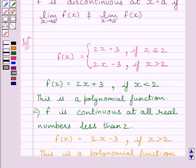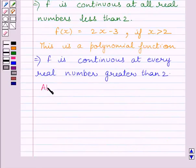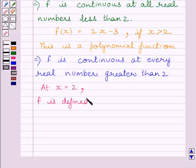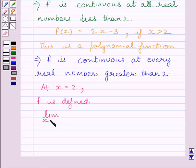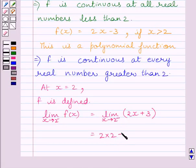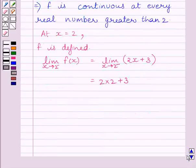Let us now check the continuity of the function at x = 2. Clearly we can see the function is defined at x = 2. Let us now find the limit of the function at x = 2. First, we will find the left-hand side limit: limit as x tends to 2-minus of f(x) = 2(2) + 3 = 7.